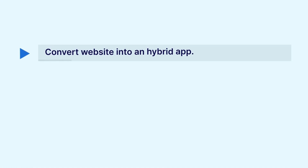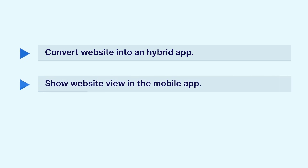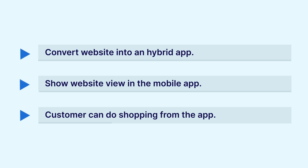Welcome back to our new video tutorial of the hybrid mobile application for WooCommerce platform-based web stores. This app converts your website into a hybrid app. It uses the theme of the website and can be downloaded from the Google Play Store. It provides a view of the website to customers and allows them to do shopping from a smart device.